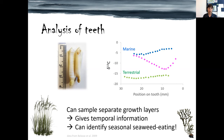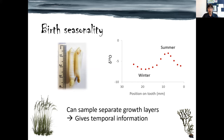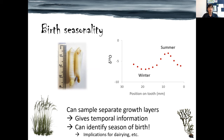We can also look at oxygen stable isotope ratios, with which we can study birth seasonality. Oxygen stable isotope ratios in temperate climates vary cyclically with temperature. We can compare the position of the peak in oxygen isotope ratios with reference data to tell us about the time of year that an animal was likely born, and again this has implications for dairying, for example.